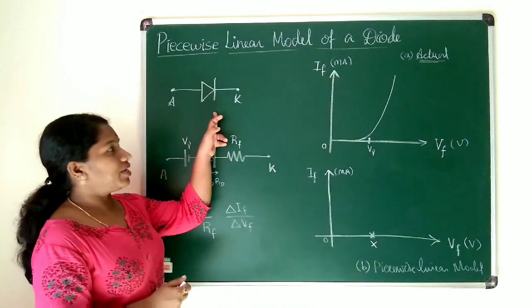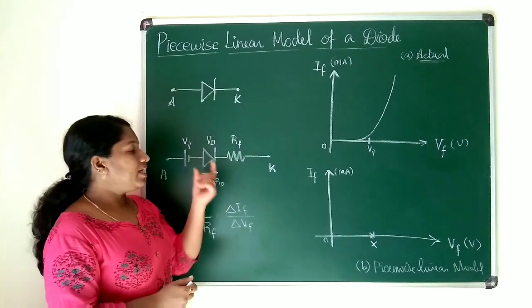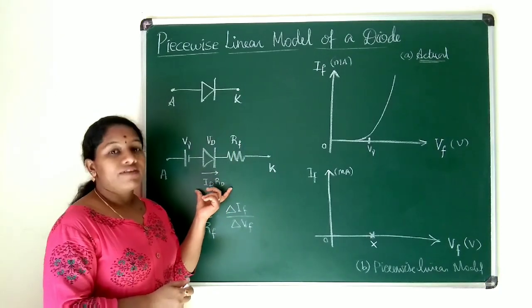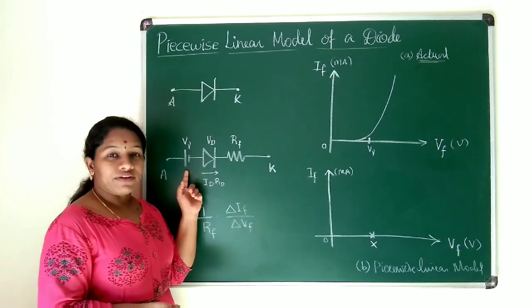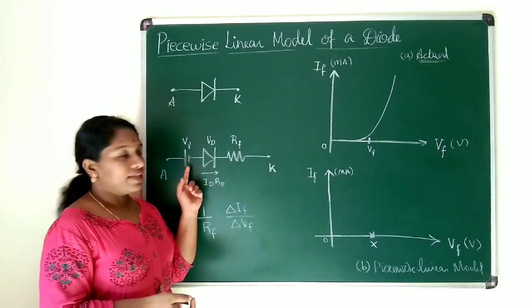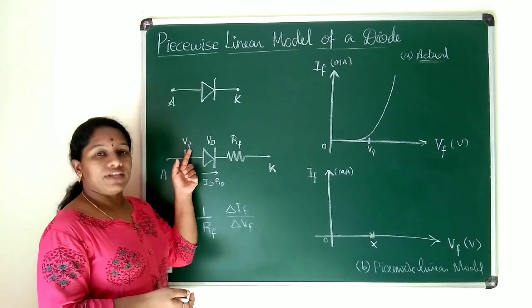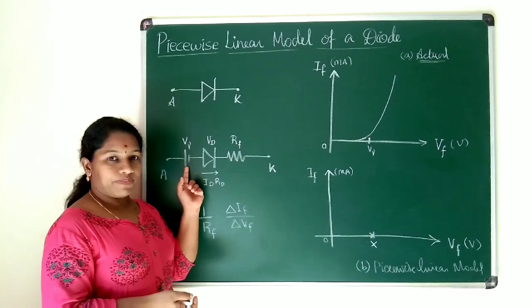I have a diode here with anode and cathode terminals marked, and the equivalent end of the diode written. When we forward bias the diode, we get a voltage drop called the forward voltage drop, represented by V_nu, and a battery.